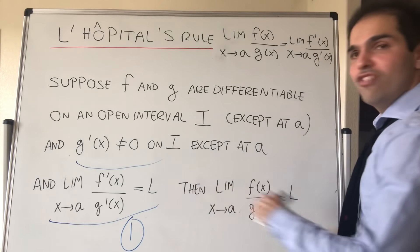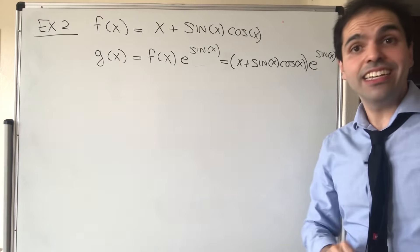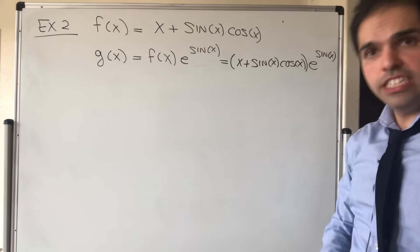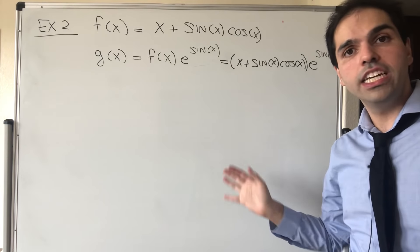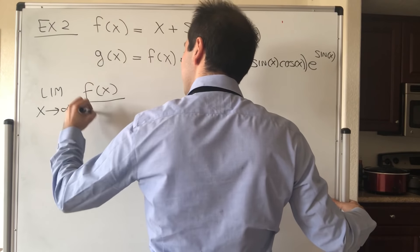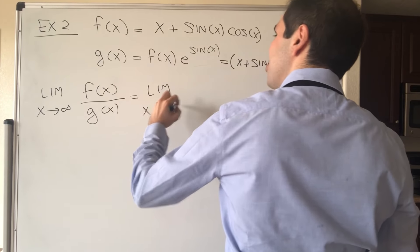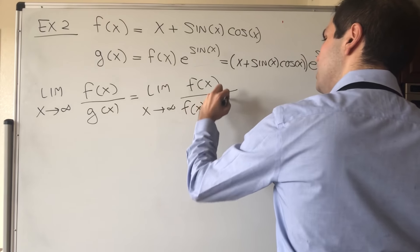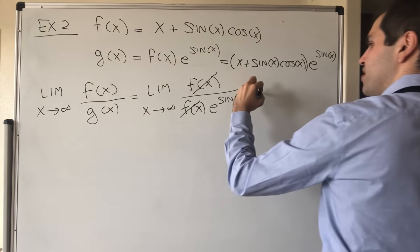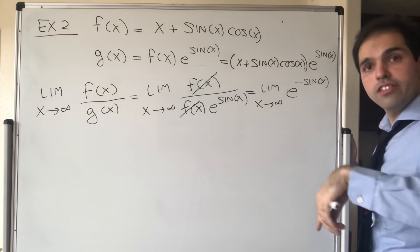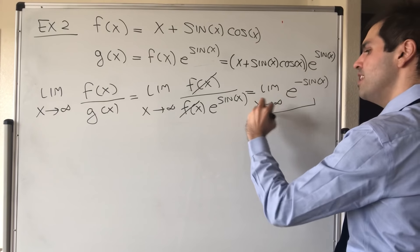Now what I would like to do is find a counterexample to the second assumption. The second example is actually more interesting. Consider f(x) = x + sin(x)cos(x), and g(x) = f(x) · e^(sin(x)). Let's first show that the limit of f over g doesn't exist. The limit as x goes to infinity of f(x)/g(x) equals the limit of x / (x · e^(sin(x))), which simplifies to the limit as x goes to infinity of e^(−sin(x)). This oscillates between e^(−1) and e^1, so this limit actually doesn't exist.